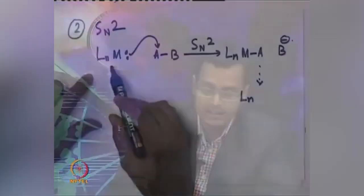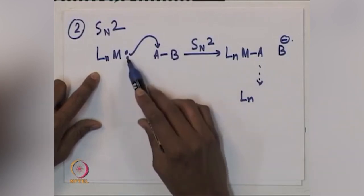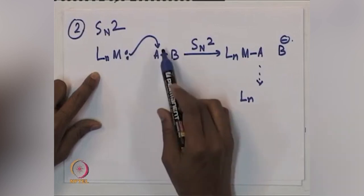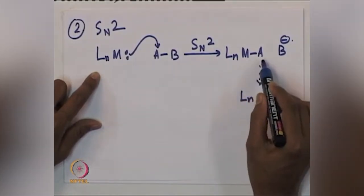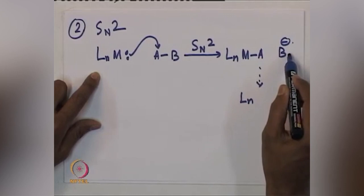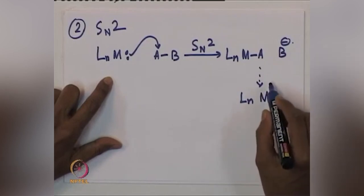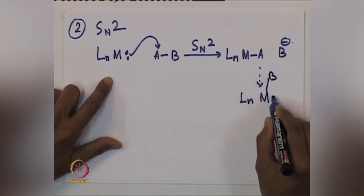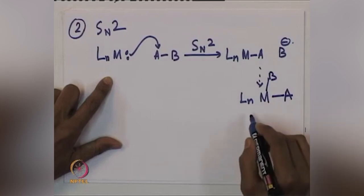SN2 mechanism involves nucleophilic attack on the substrate. In organometallic chemistry also, we see that a ligand-metal complex will attack the substrate AB, where the metal lone pair or negative charge attacks on A, with B leaving. Overall you get a LnM-A complex with B minus present. The next step will be recombination of B with the metal to give LnM-AB.